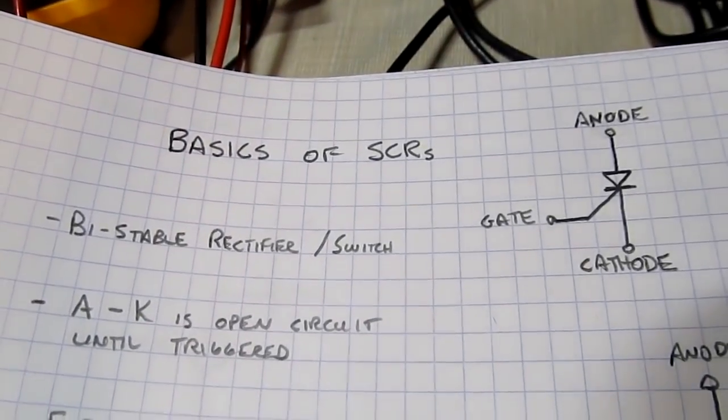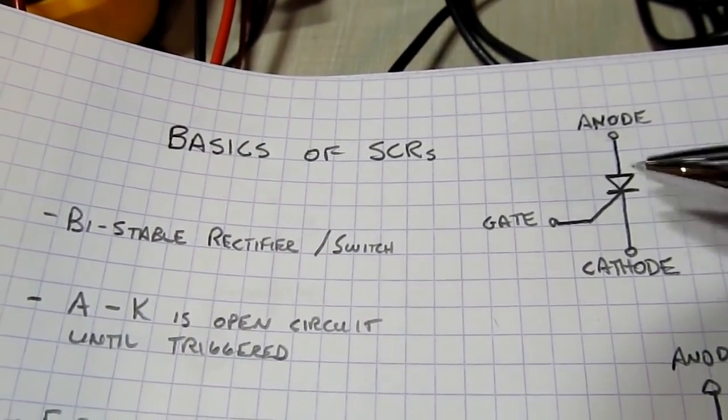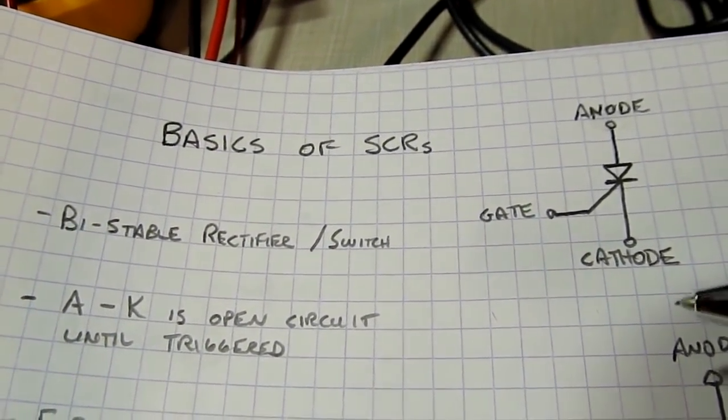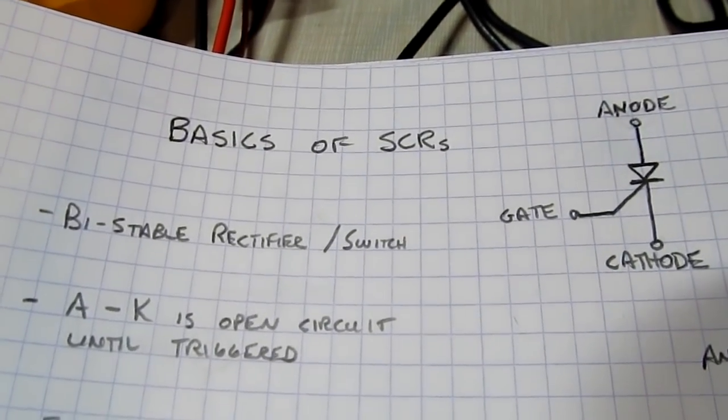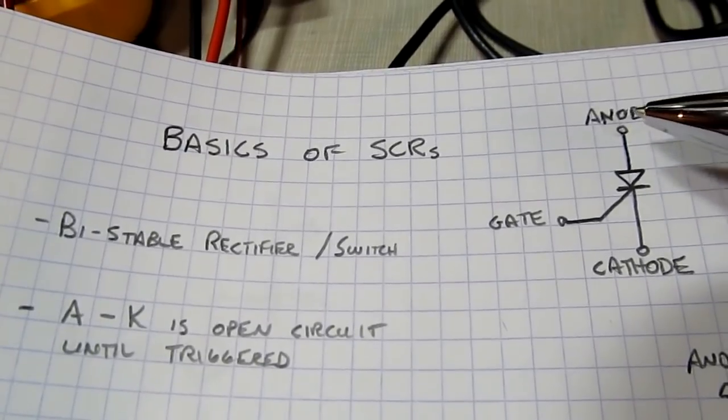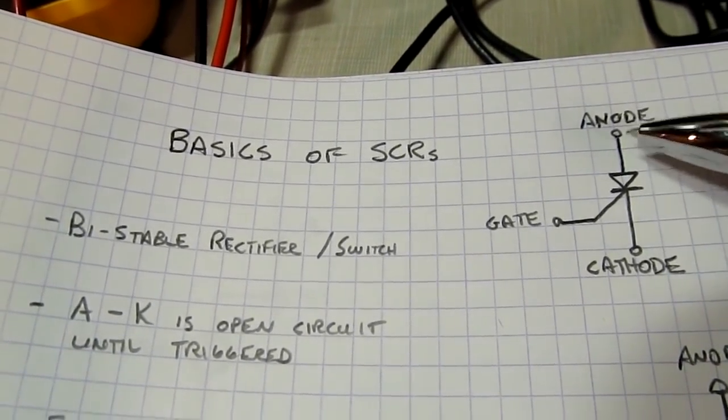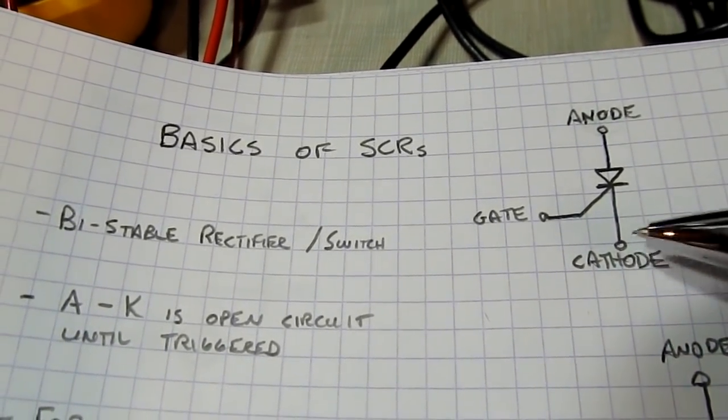So an SCR, or silicon-controlled rectifier, is essentially a diode that can be turned on and off. And really, it's kind of a bistable latching rectifier. And what we mean by that is that the anode-to-cathode path, the normal forward bias path of the diode, is open-circuited until the device is triggered.